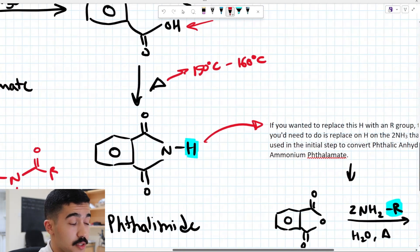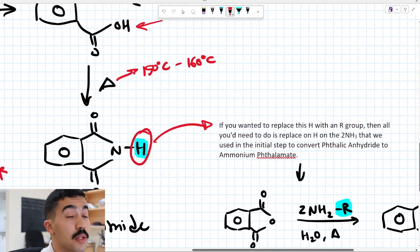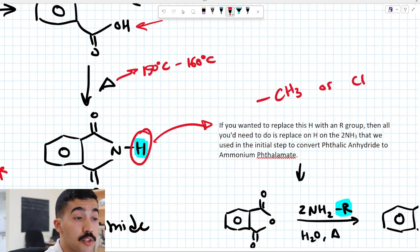Now in this case, our R group that is attached to the nitrogen is hydrogen. What if, hypothetically, you're solving an example that asks you to replace this with an R group? Let's say CH3, or something like a CH2CH3. How would you go about this?